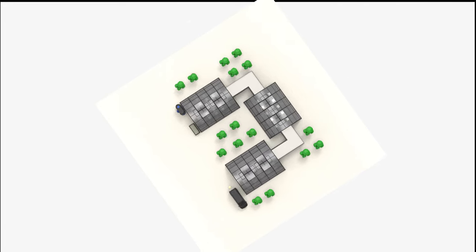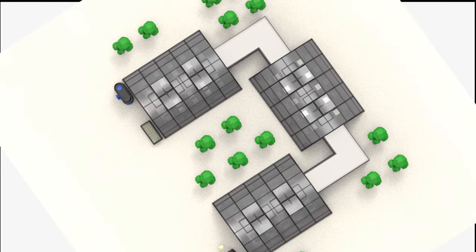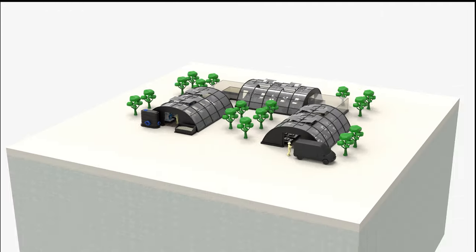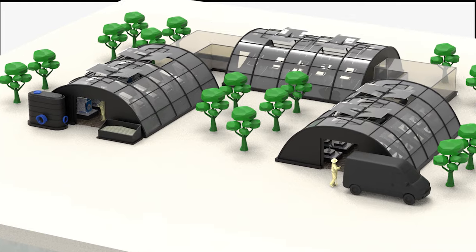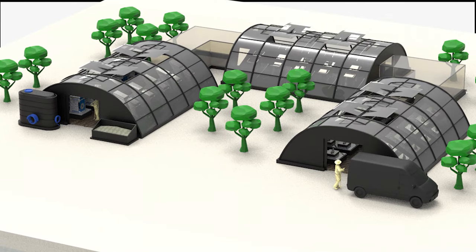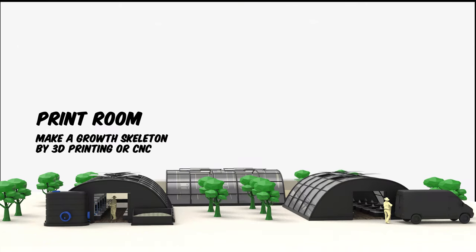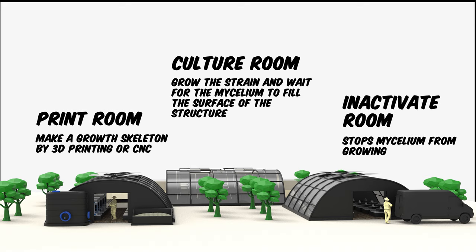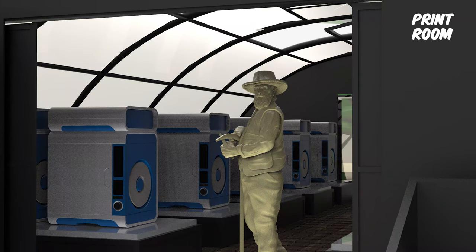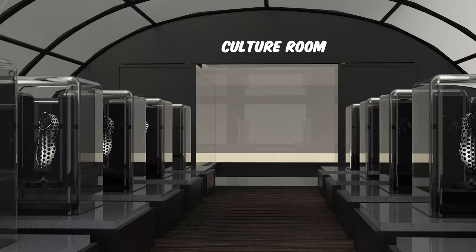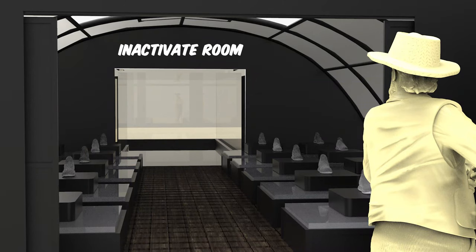When cultivation becomes a means of industrial production, the role of traditional agriculture changes. Farms that once grew food are repurposed to produce products. In this scenario of a Mycelium farm, farmers with specialized skills embrace the need for customization and grow customized products for their consumers.